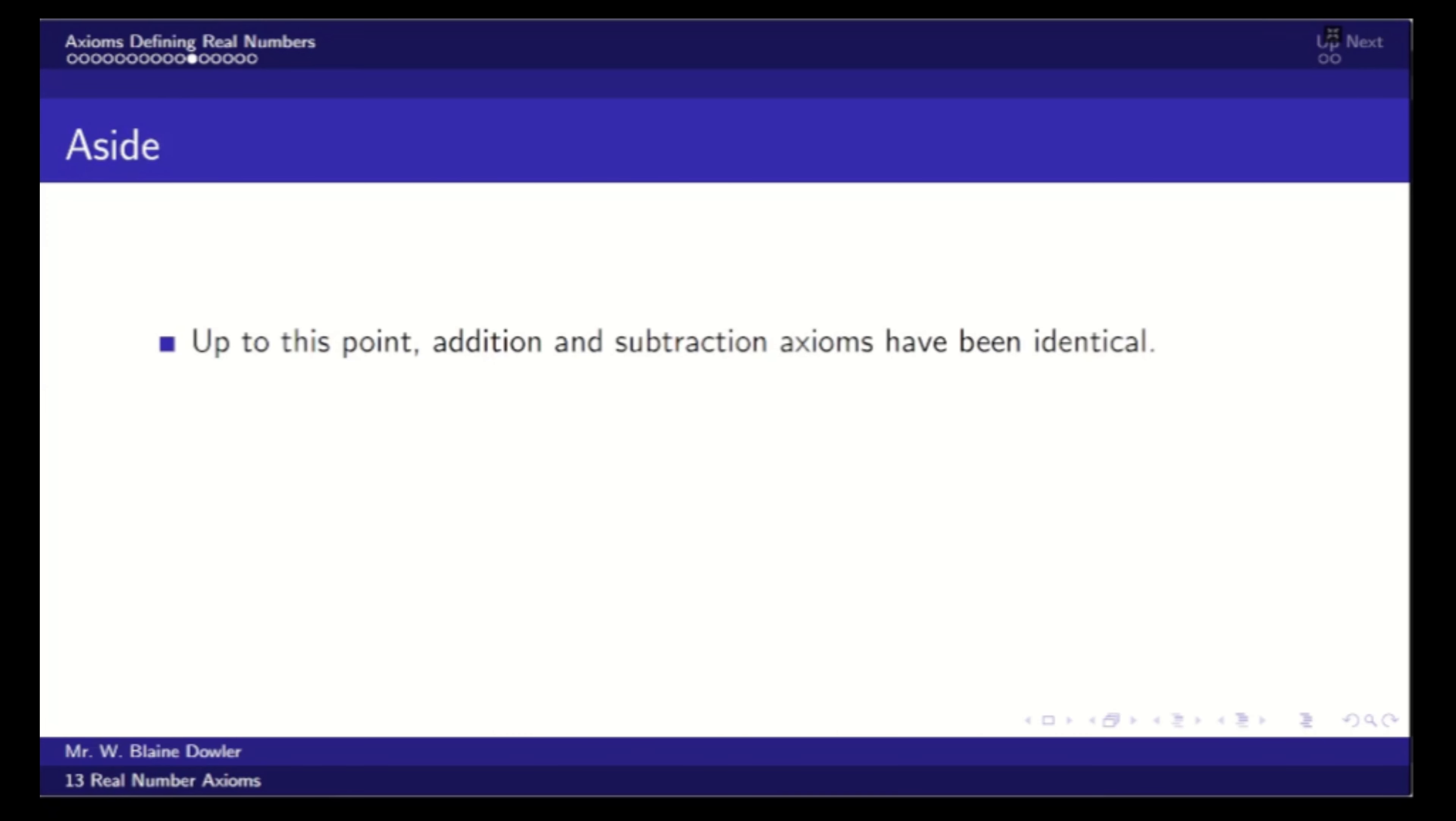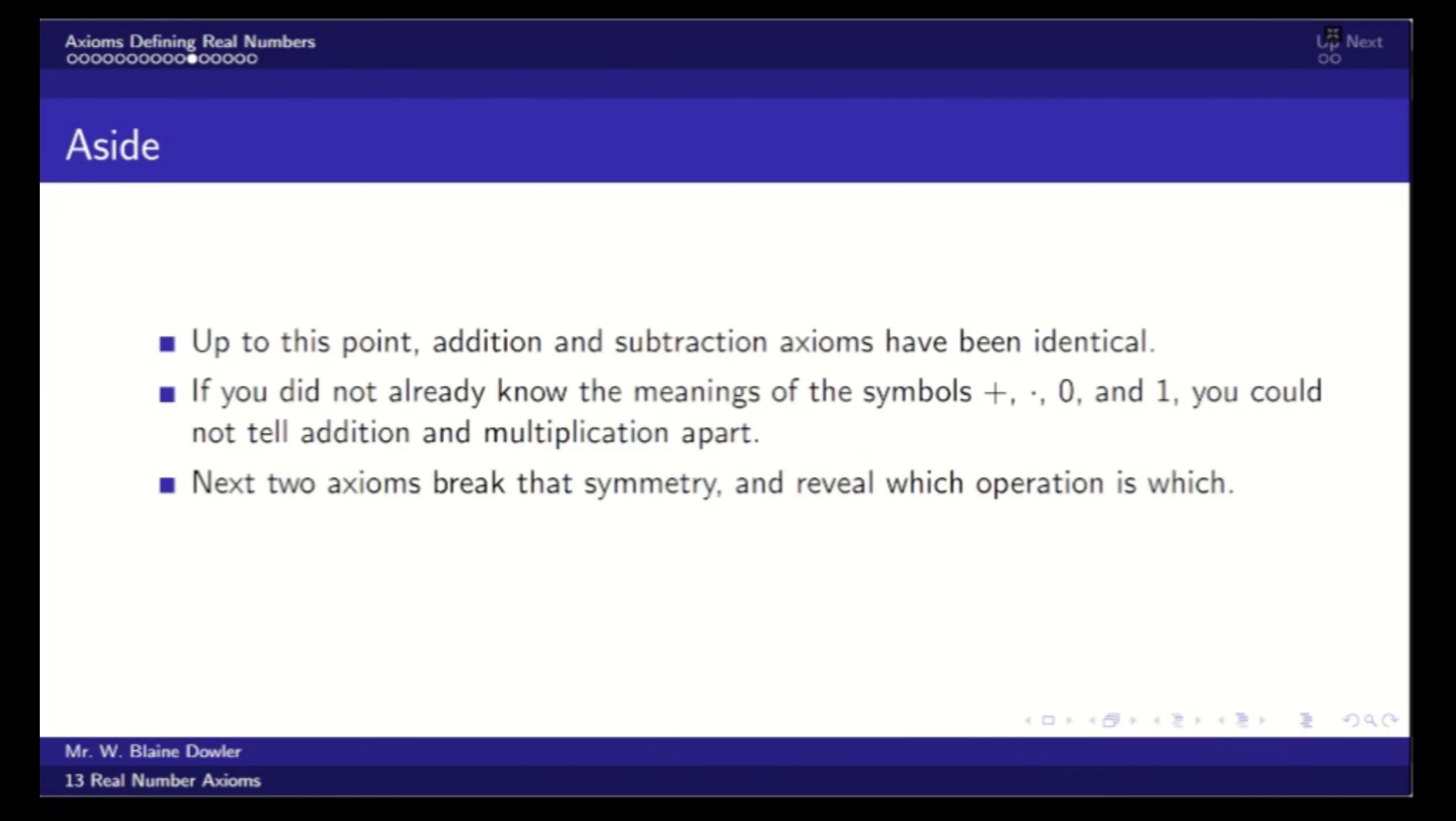Now, a little aside before we go on to axioms 9 through 13. Up to this point, the addition and subtraction axioms have been identical. If you didn't already know the meaning of the symbols for addition, multiplication, 0 and 1, if I just gave things to you mathematically without the verbal descriptions, you would not be able to tell addition and multiplication apart. It's actually the next two axioms that break that symmetry. So we can define which operation is addition, which is multiplication. The 11th axiom shows how they combine. And then axioms 12 and 13 just specify that these are real numbers and not some other consistent system.